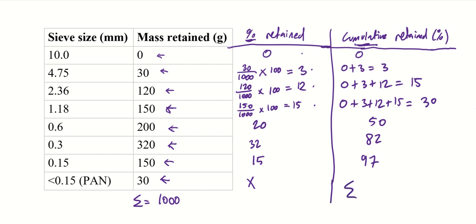So the summation, and you need that as the final step in this column, you need to add everything together. So it's 3 plus 15 plus 30 plus 50 plus 82 plus 97. And the answer that you should get is 277. And that's a very important number. So we're just going to put a square around that figure.